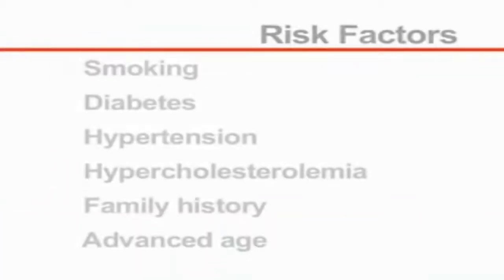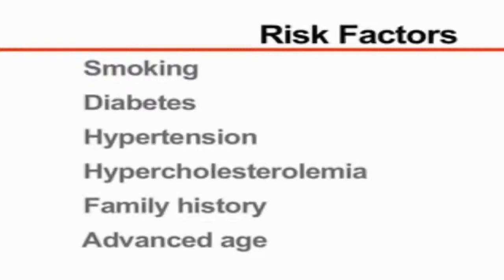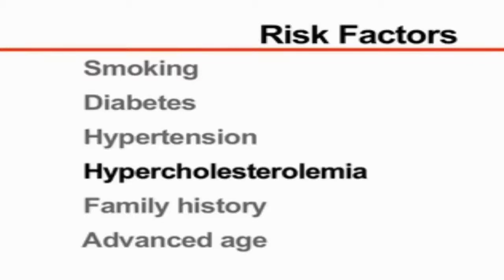Some of the known risk factors for peripheral arterial disease include smoking, diabetes, hypertension, hypercholesterolemia, a family history of the disease, and advanced age.